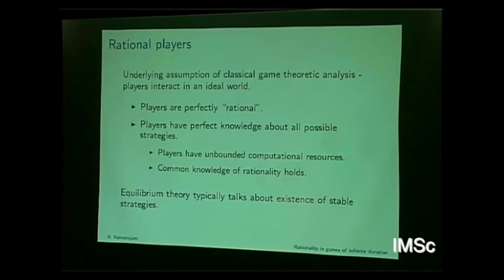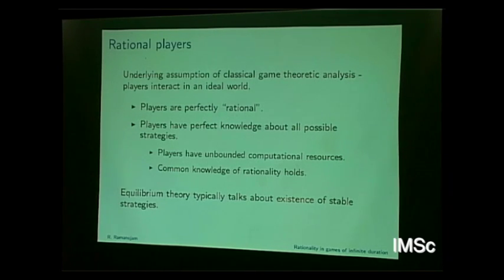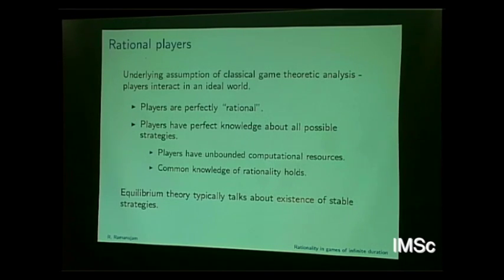Equilibrium theory typically talks about the existence of stable strategies. You can think of it as a prediction of play — what players would do. Stable in the sense that you look at whether a player is likely to switch away from whatever equilibrium predicts.